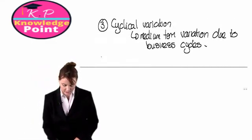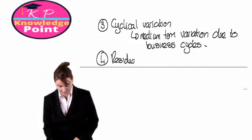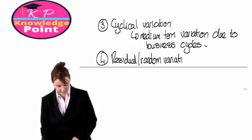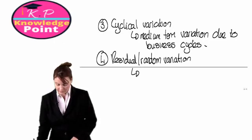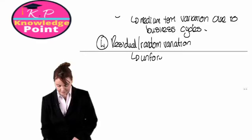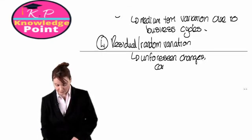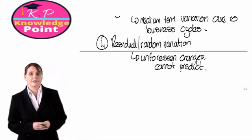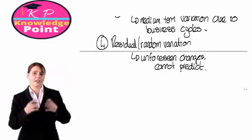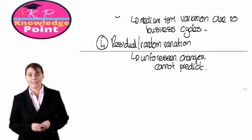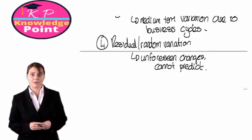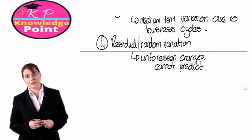So we have our third component, cyclical variation. The final component is the residual or random variation. These are changes in our sales due to unforeseen changes. So we cannot predict the random or residual variation. This might be for example, a change in the government and a change in the regulation affecting our ability to sell our product. Now for F2 purposes, by definition, we can't calculate the residual variation. So you just need to understand what this is.